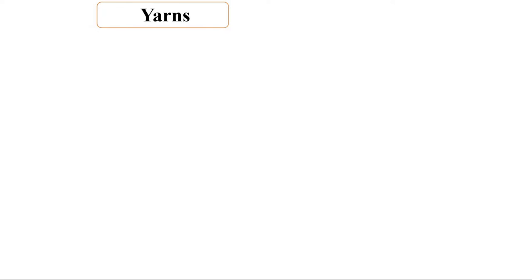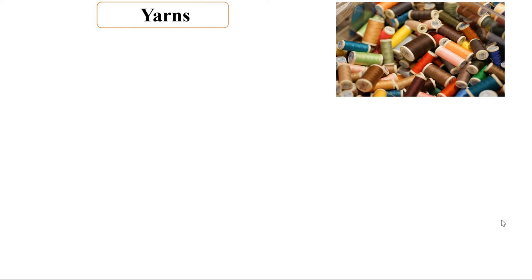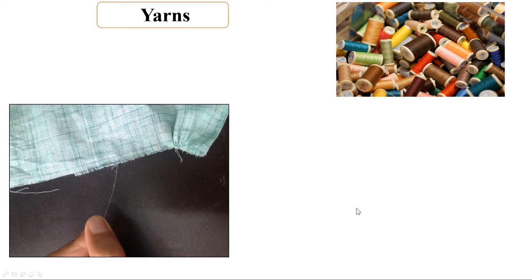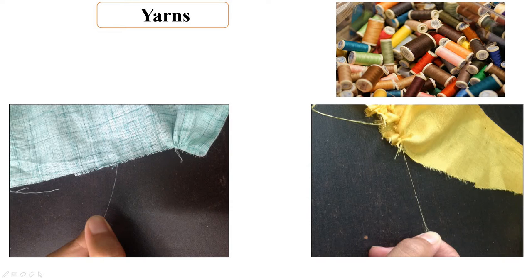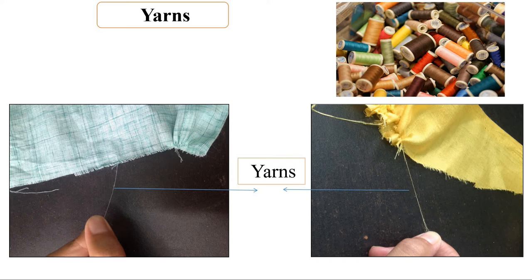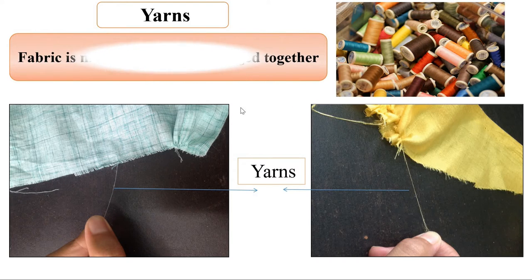These strands are called yarns or loose threads. You must have seen these yarns at some tailor shop or even at your home. To better understand yarns, try taking out a loose thread from any of the edges of a fabric piece — these loose threads are called yarns. Thus we can say that fabric is made up of yarns arranged together.